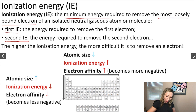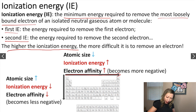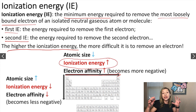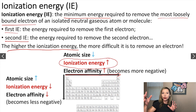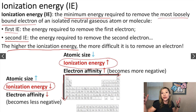The higher the ionization energy, the more difficult it is to remove an electron. When we go left to right across a period in the periodic table, we increase the ionization energy because the atomic size gets smaller and smaller, and it's harder to remove that electron from the outermost shell. However, when we go down in a group, the ionization energy goes down because the atomic size increases, and it's easier to remove the outermost electron.